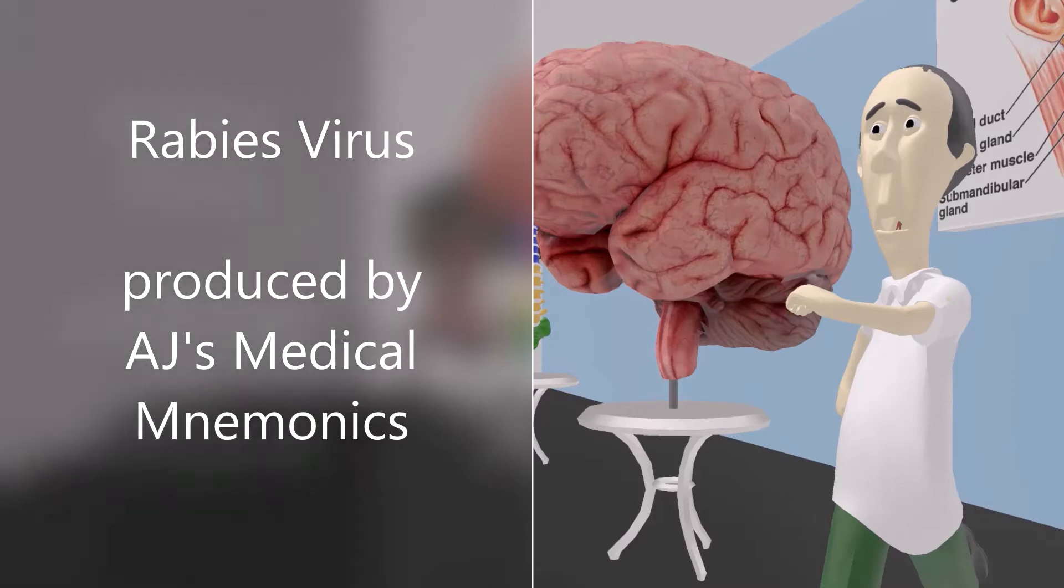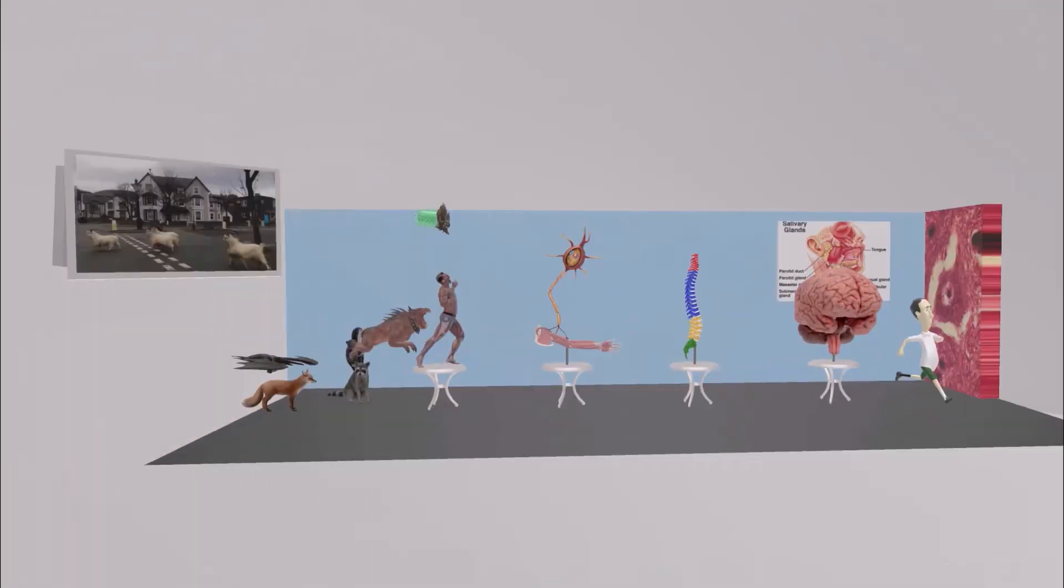Let's get started. Hey, welcome to our scene on the rabies virus. In this scene, we're going to talk about the characteristics of the virus, how it infects the body, and then we're going to talk about treatment at the end. So let's begin.